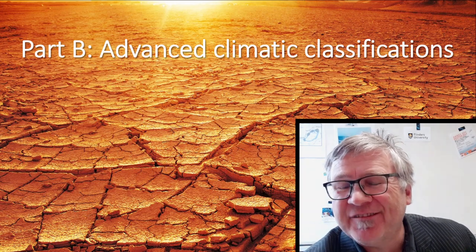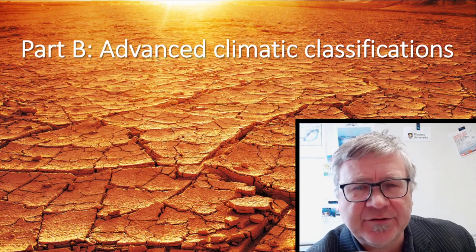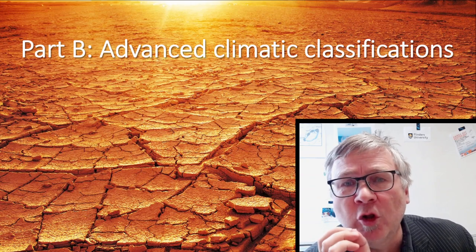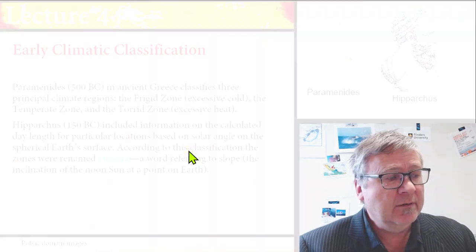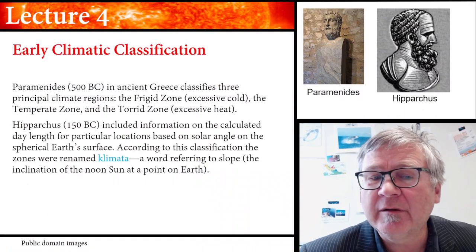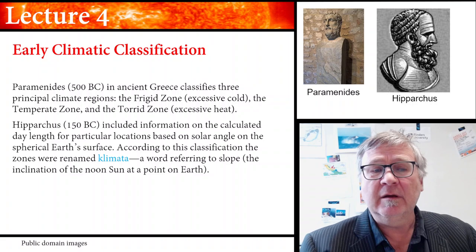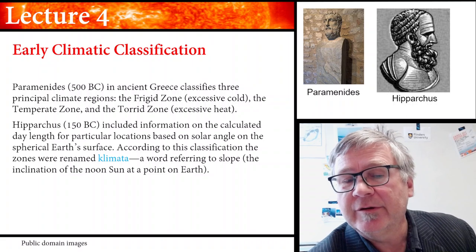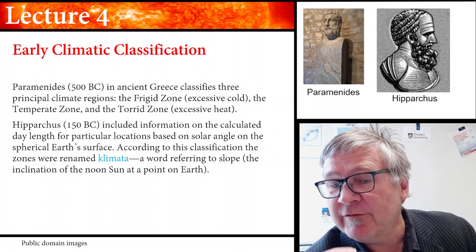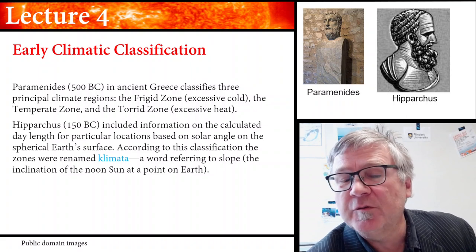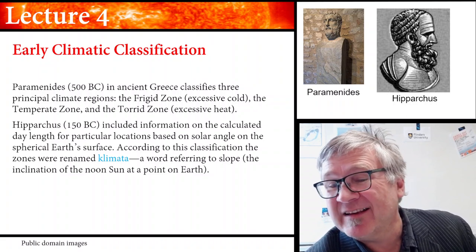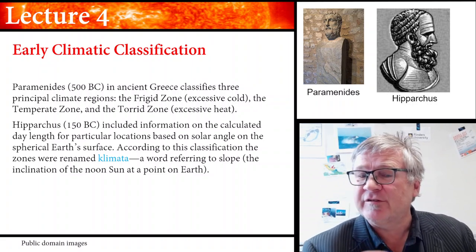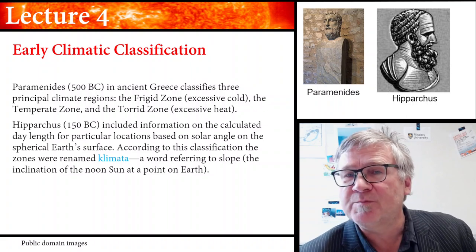Let us talk about advanced climatic classifications. People have actually thought about climate classifications for a long time — it started 500 years BC. Parmenides in ancient Greece classified three principal climate regions: the frigid zone of excessive cold, the temperate zone, and the torrid zone of excessive heat. So the definition of the temperate zone actually goes back a long time.